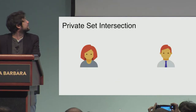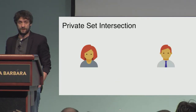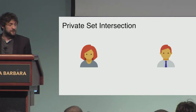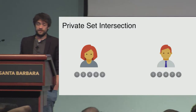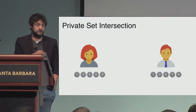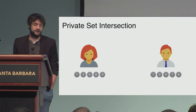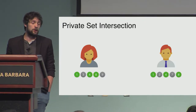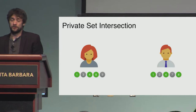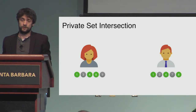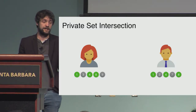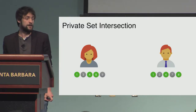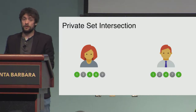This paper deals with the private set intersection problem where we have two parties, Alice and Bob. Each holds a set — Alice holds numbers like one, three, four, eight, nine and Bob holds some other numbers — and they would like to determine which elements they have in common without revealing anything about elements they don't share. Both parties should learn that one, four, and eight are common, but Bob should not learn that Alice has three or nine.